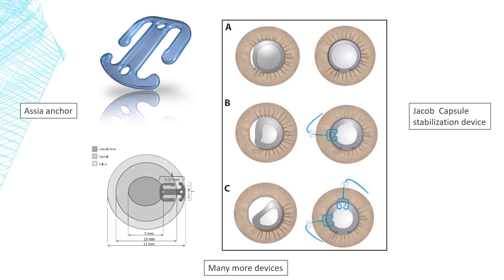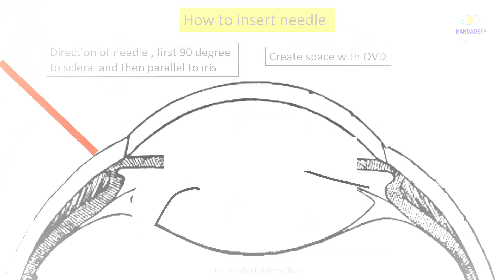There are other devices like the Asia Anchor and the Jacob capsule stabilization device. These are both like paper clips which can be used to keep the bag in place and they support the anterior capsular axis well. In case of posterior capsular dehiscence also, these devices can be of use if you have them available in the OT.